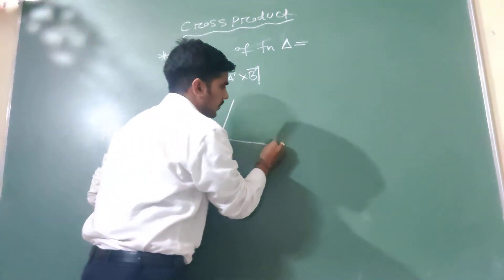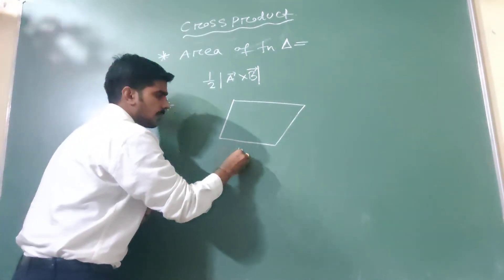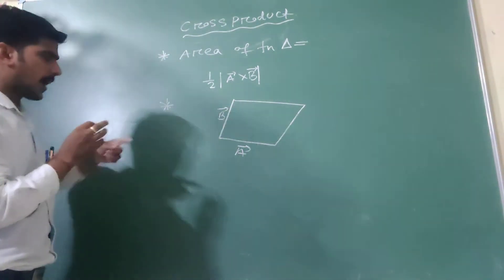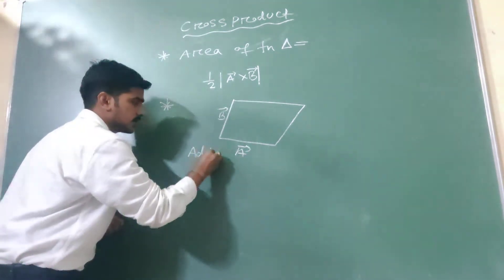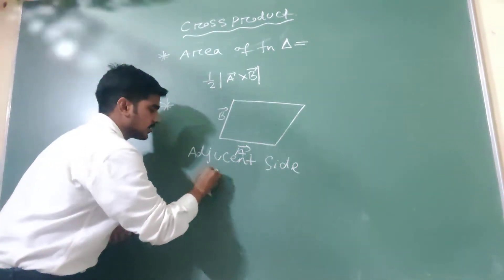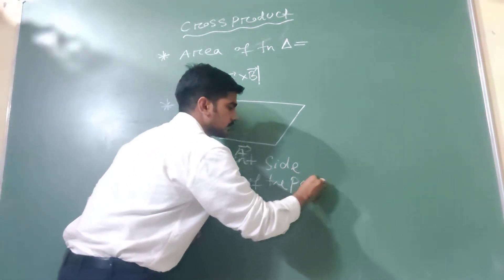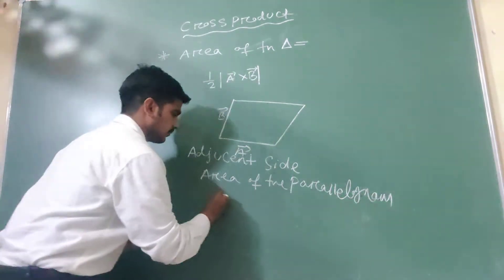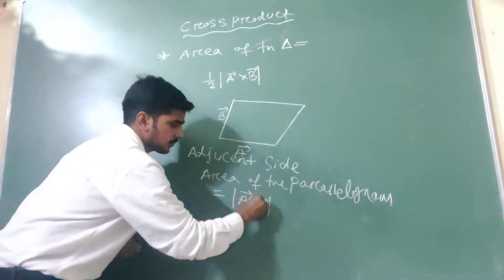Suppose this is the parallelogram. The area of the parallelogram is equal to the magnitude of A vector cross B vector.